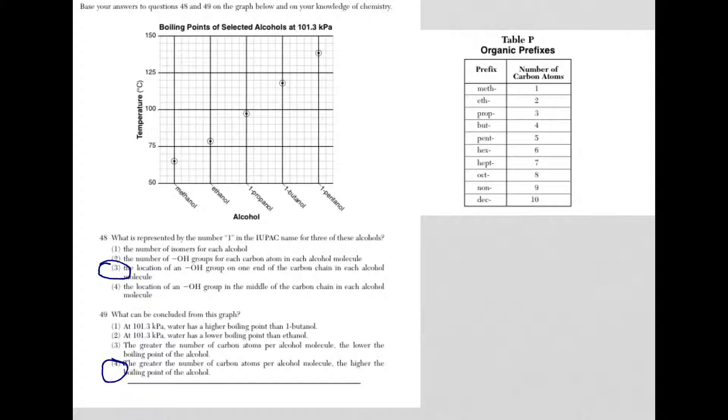But the naming isn't tied into the graph - they're really asking you a naming question here in 48. The number 1 that you see in front of the names for all of these alcohols just means the position of the hydroxyl group on the molecule.